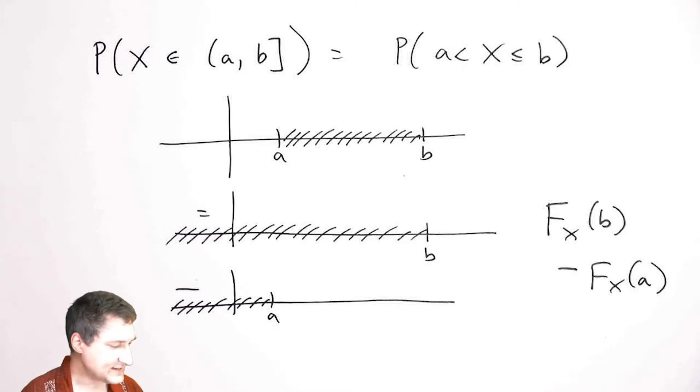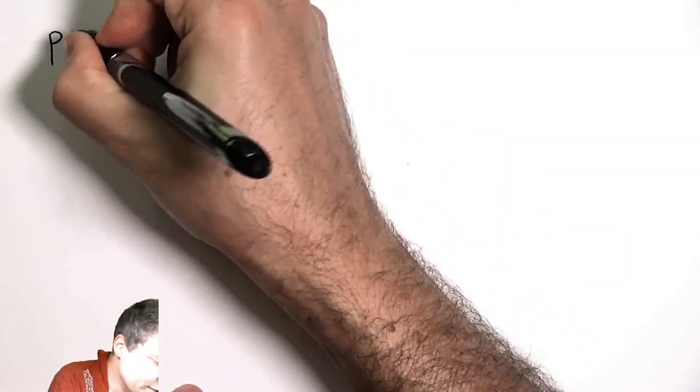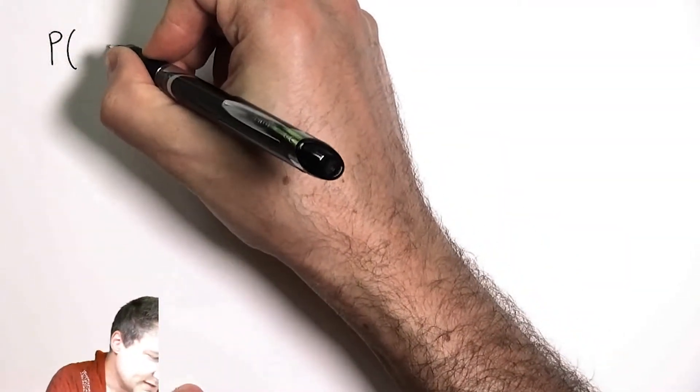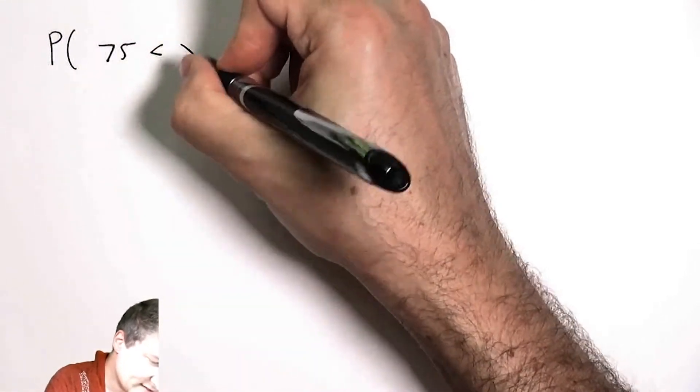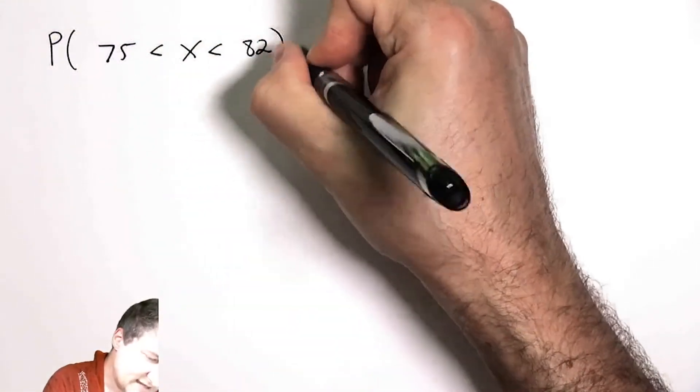And so using this tool, now I can ask about the probability of any given interval. Suppose I want to know what's the probability that my class time is between 75 minutes and 82 minutes.